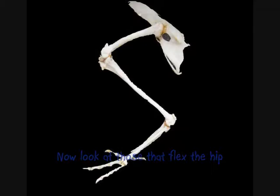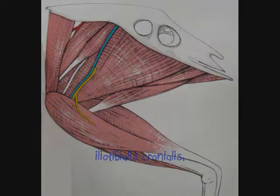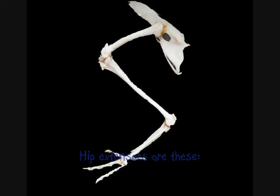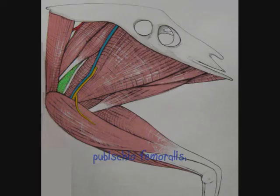Now look at those that flex the hip: iliotibialis cranialis, iliotrochum entericus caudalis. Hip extensors are these: ischial femoralis, flexicruvis lateralis, pubicchiofemoralis.